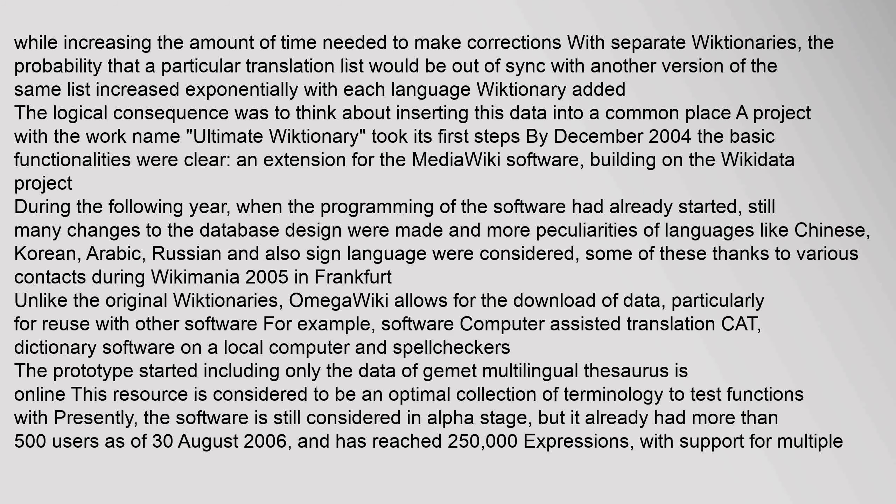A project with the work name Ultimate Wiktionary took its first steps by December 2004. The basic functionalities were clear: an extension for the MediaWiki software, building on the Wikidata project. During the following year, when the programming of the software had already started, still many changes to the database design were made, and more peculiarities of languages like Chinese, Korean, Arabic, and Russian, and also sign language were considered.